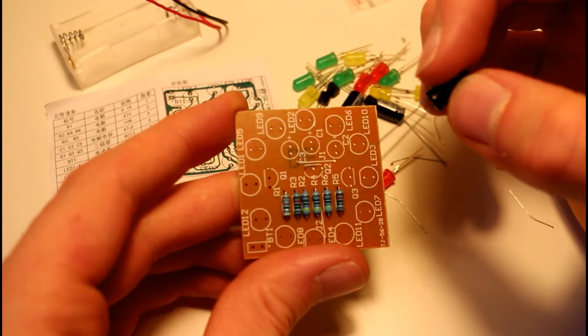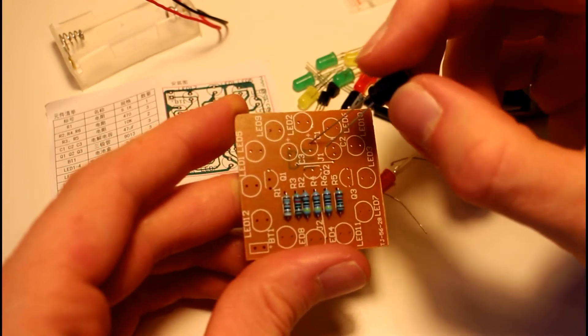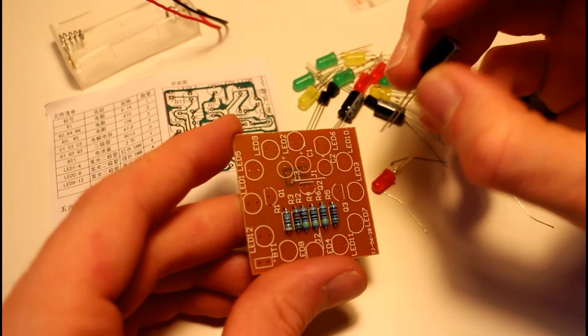So that is where the long leg goes, the long leg is the positive. Same over here, we have C2, there is the positive, and where is C1? That's right beside it, there's the positive there. So the long leg is the positive, so that's where our three capacitors go.